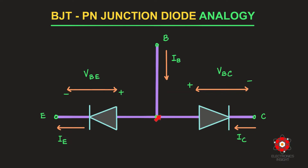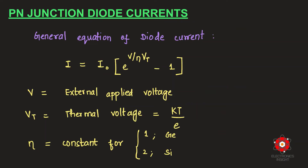Considering the node and applying Kirchhoff's current law: the sum of currents entering the node equals the sum of currents leaving the node. The total emitter current is therefore the sum of the base current and the collector current.